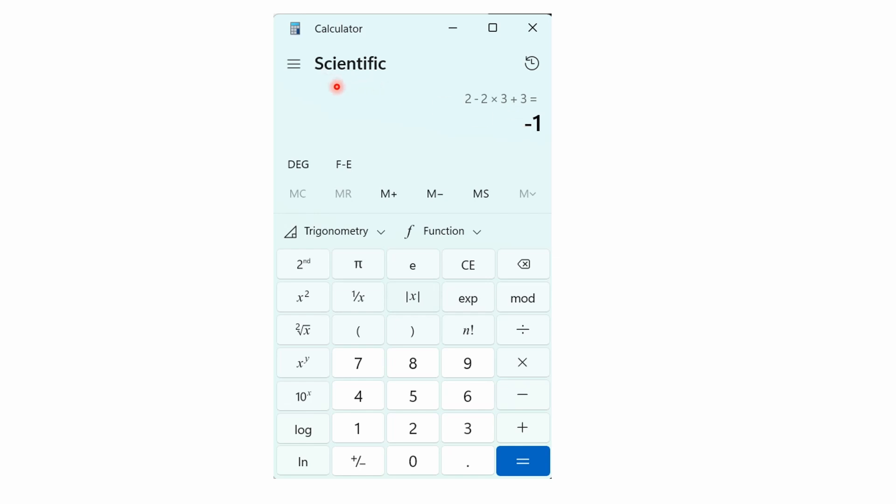If you're using standard mode, it's actually resolving every operation. It's using immediate execution. So it's immediately resolving each operation. So it's actually going 2 minus 2, and then getting 0, and then taking your 0 times 3, getting 0, and then adding 3 and getting 3. But it doesn't mean the calculator is wrong. It means that the person using it needs to remember that